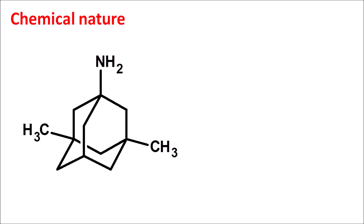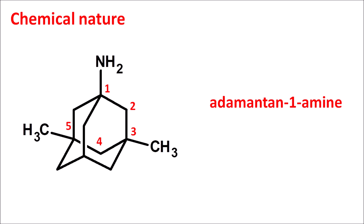This is the structure of Memantine. We can clearly observe it has the adamantane nucleus. We start the numbering from the bridgeheads — carbon 1, 2, 3 — then completing the numbering: 4 and 5. The nucleus is adamantane with an amino group at the first position, giving the suffix adamantan-1-amine. Methyl groups are present at the third and fifth positions, so 3,5-dimethyl. Therefore, 3,5-dimethyladamantan-1-amine is Memantine.